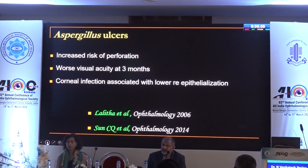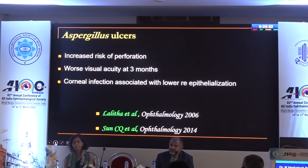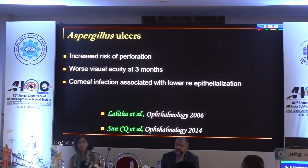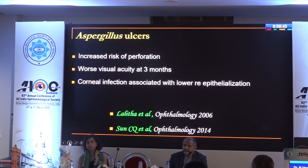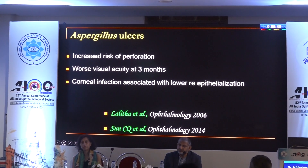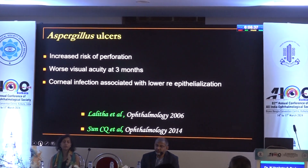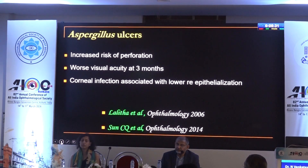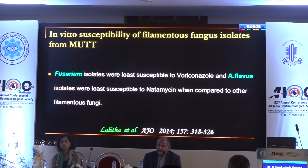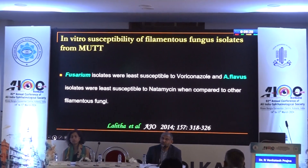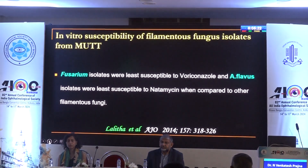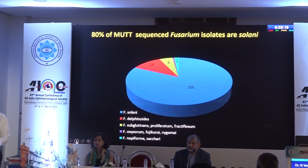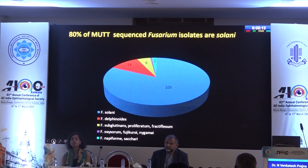We also know there is a definite difference in clinical response between Aspergillus ulcers and Fusarium ulcers. Aspergillus ulcers have a comparatively poorer prognosis than Fusarium ulcers. That is because of the differential response to natamycin — Fusarium responds much better to natamycin. The same difference was also reflected in the microbiology setup, confirming fundamental differences between Fusarium and Aspergillus.